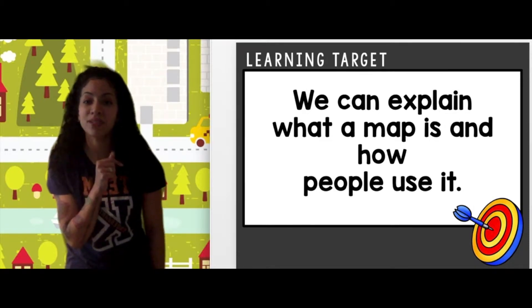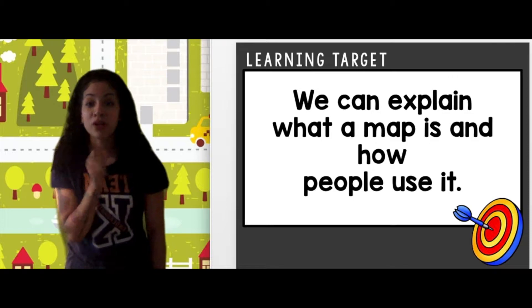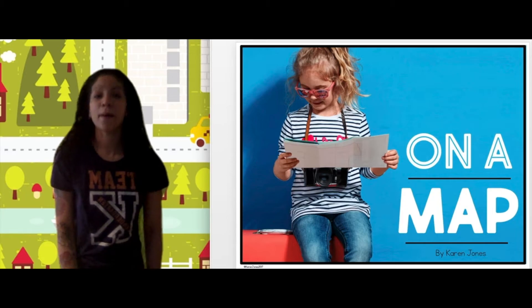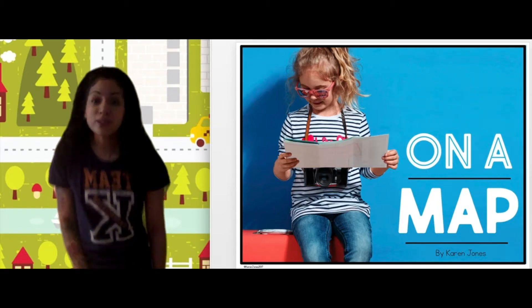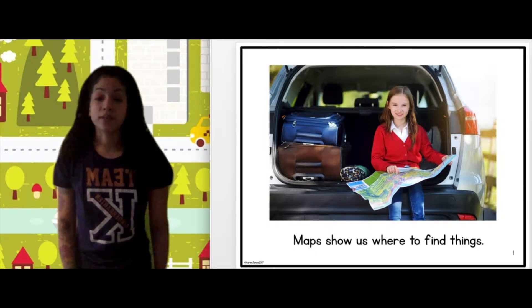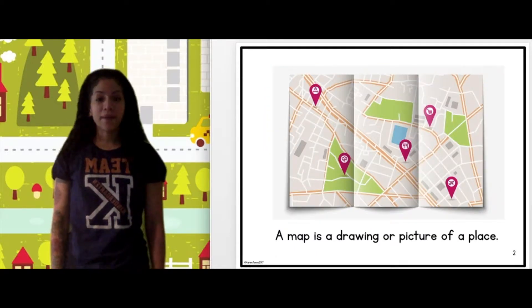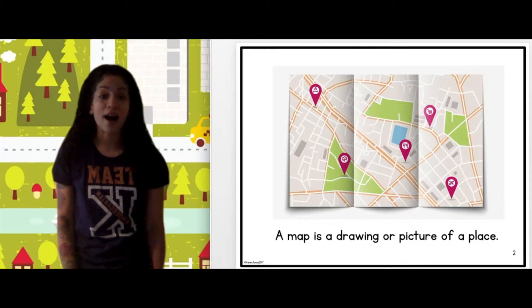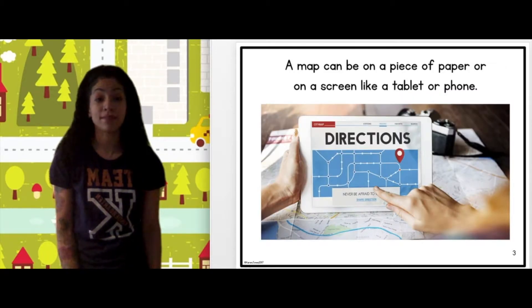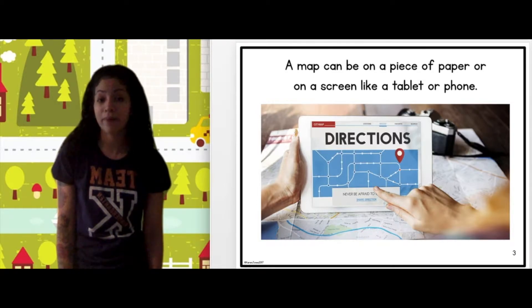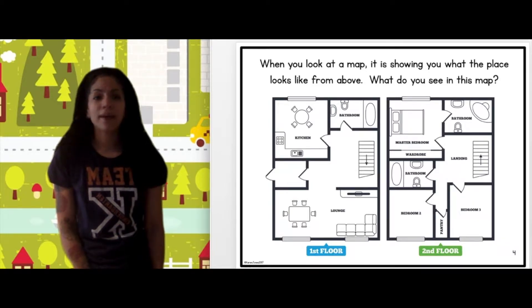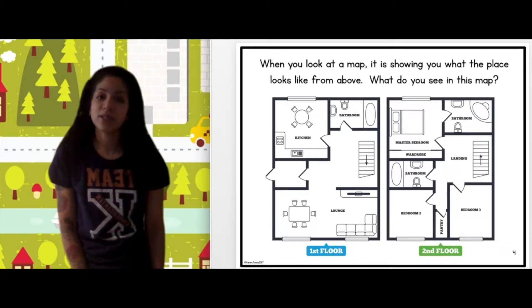Know that at the end of this reading, you should be able to talk all about it. Alright, let's get it started. On a Map by Karen Jones. Maps show us where to find things. A map is a drawing or picture of a place. A map can be on a piece of paper or on a screen like a tablet or phone. When you look at a map, it is showing you what the place looks like from above.